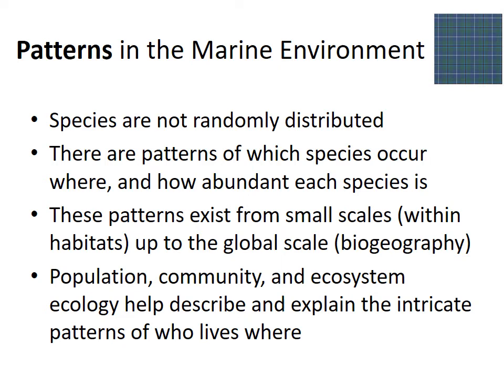All these complicated ecological interactions result in really interesting patterns of life in the marine environment. Species in the ocean are not randomly distributed — you can't cast a fishing line anywhere in the world with an equal chance of catching any species. There are very strong patterns of what species occur where, what places have high density and diversity of life, and what places do not. These patterns exist at scales from within a habitat all the way to the global scale — like what species are found in the Pacific Ocean versus the Atlantic Ocean.